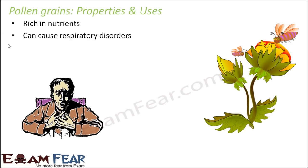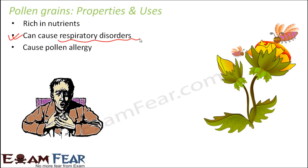Pollen can also cause respiratory disorders, and quite a few people have pollen allergy. If you take a hibiscus flower, also known as the china rose — the red colored flower — and pick up the tip of the filament, you will see very small, extremely tiny, yellow colored powdery substance. That powdery substance is the pollen grain. Many people tend to get respiratory disorders; as soon as they come in contact with lots of pollen, they tend to sneeze or catch cold, and it can even cause diseases like asthma or bronchitis.